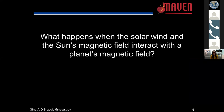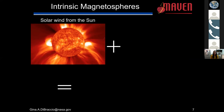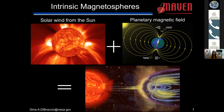What happens when the sun's solar wind and its magnetic field interacts with a planet's magnetic field? This creates what we call a planetary magnetosphere. The first type is called the intrinsic magnetosphere. If we combine the solar wind — that hot plasma streaming away from the sun — with a global planetary magnetic field like Earth's, what we get is an intrinsic magnetosphere. It's called intrinsic because the magnetic field diverting the solar wind around the planet is intrinsic to the planet itself.